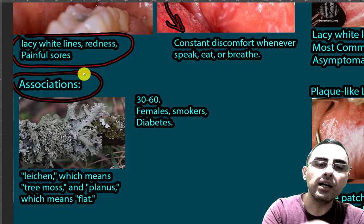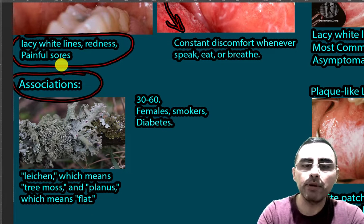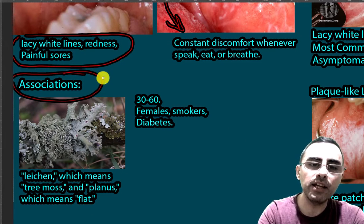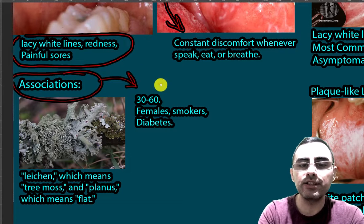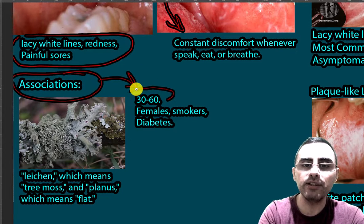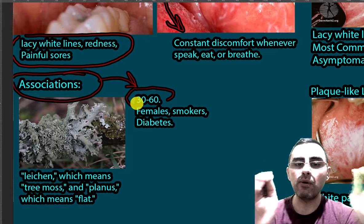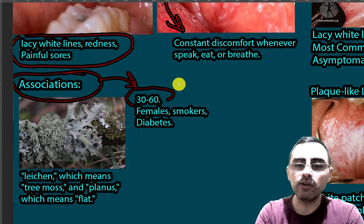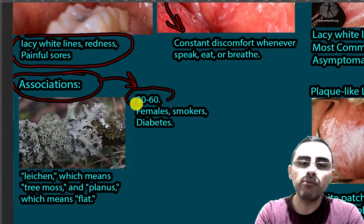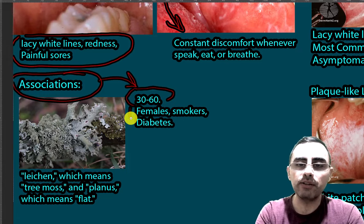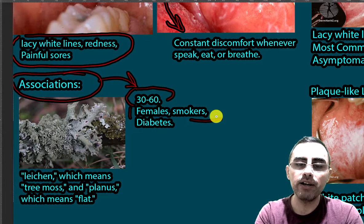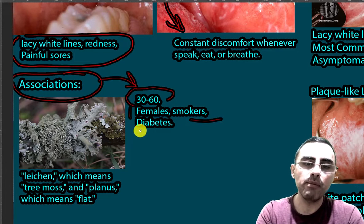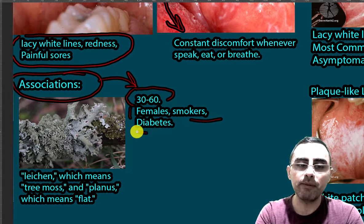Lichen planus is associated with ages 30 to 60 — this is usually the window of age when lichen planus is diagnosed. It is more common in females, in smokers, and in people with diabetes.